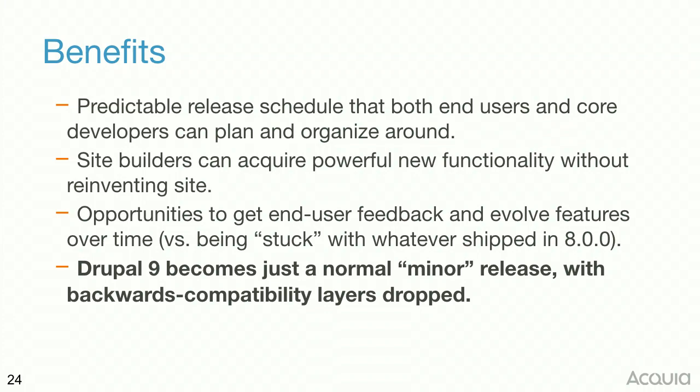There are numerous benefits to all of these steps. A predictable release cycle means both end users and core developers can plan around it. I can tell you right now that 8.5 will be out on March 7th and 8.6 will be out on October 5th. That's unprecedented — you know a year in advance when you need to plan for these minor updates. We've managed to ship four minor releases now and every single one came out when we said it would. The minor release cycle also lets us update jQuery and other dependencies, so people aren't stuck in a frozen past.